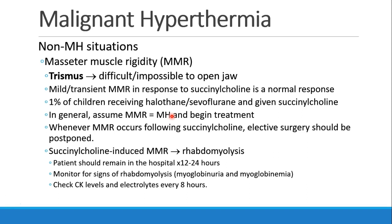We will encounter patients who develop masseter muscle rigidity — trismus — where it's difficult or impossible to open their jaw because of tight muscles. Patients can get mild or transient masseter muscle rigidity in response to succinylcholine, and it happens in about 1% of children who receive halothane or sevoflurane plus succinylcholine. We always worry it could be MH, so in general, if you get masseter muscle rigidity, you should probably assume it's MH. It's safer to treat and be wrong than to not treat and delay proper treatment.